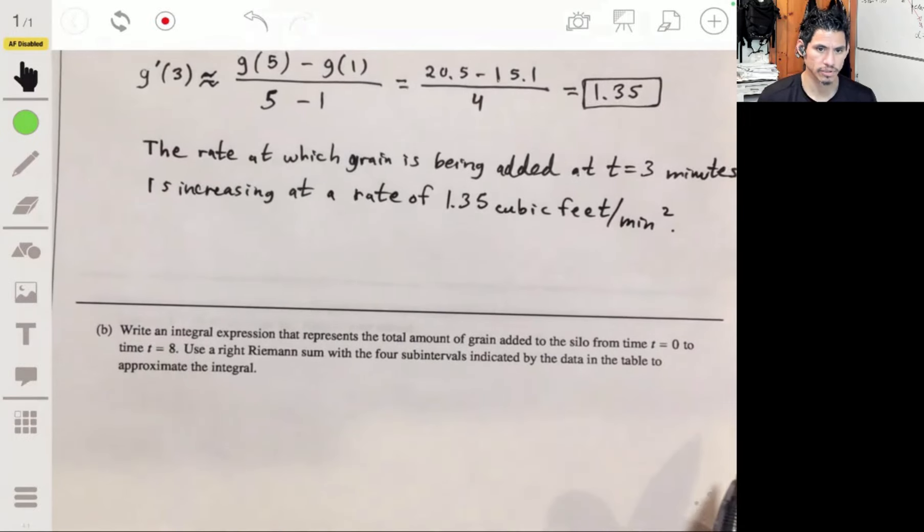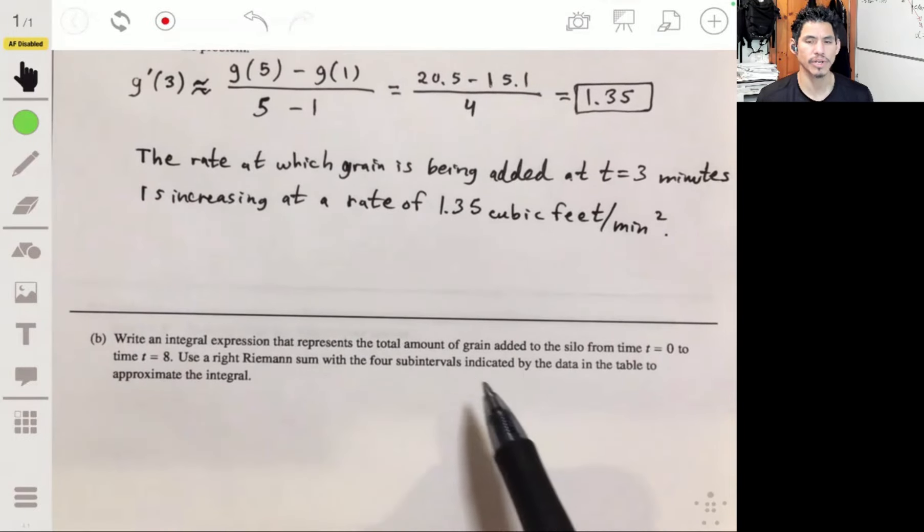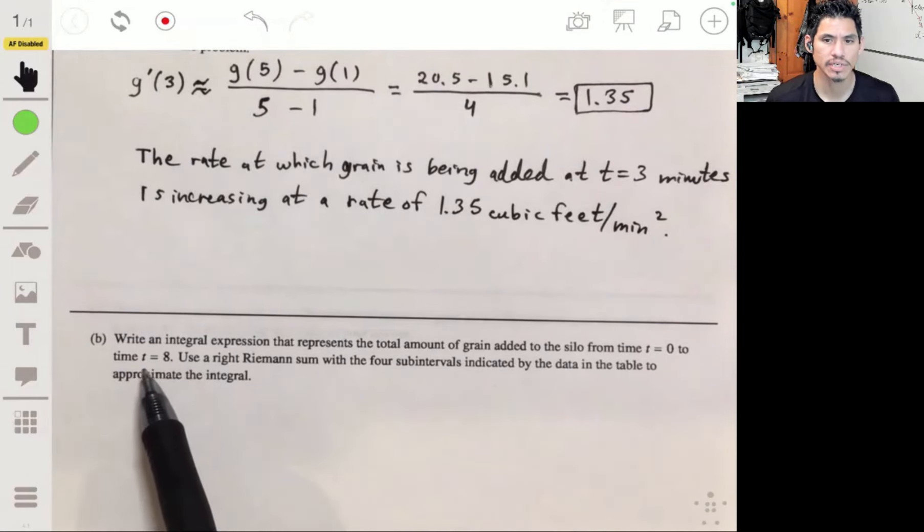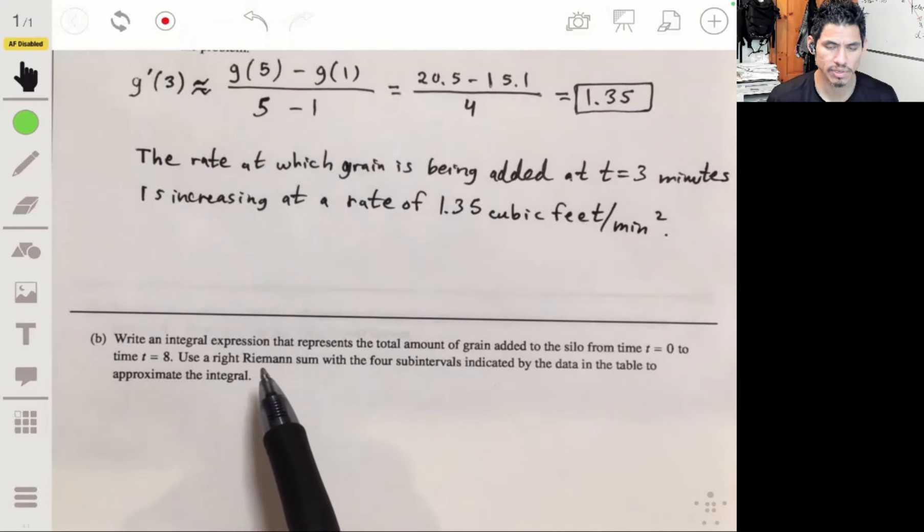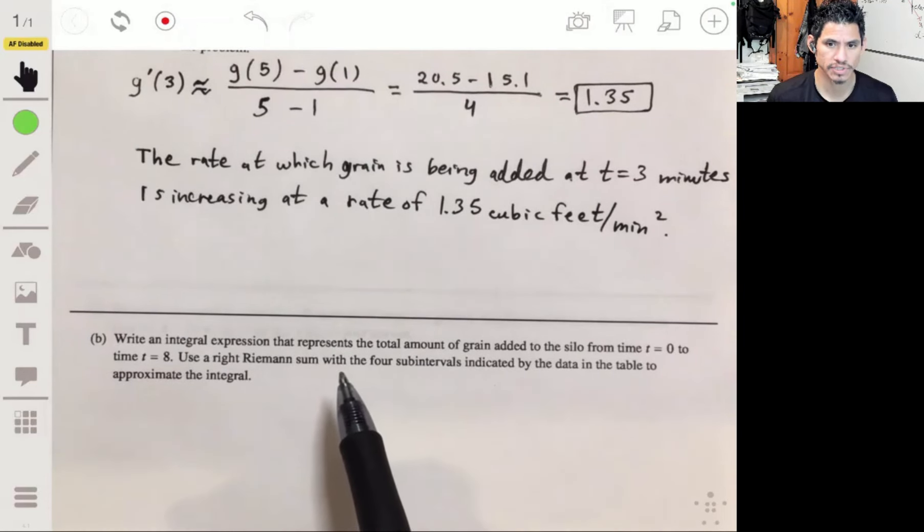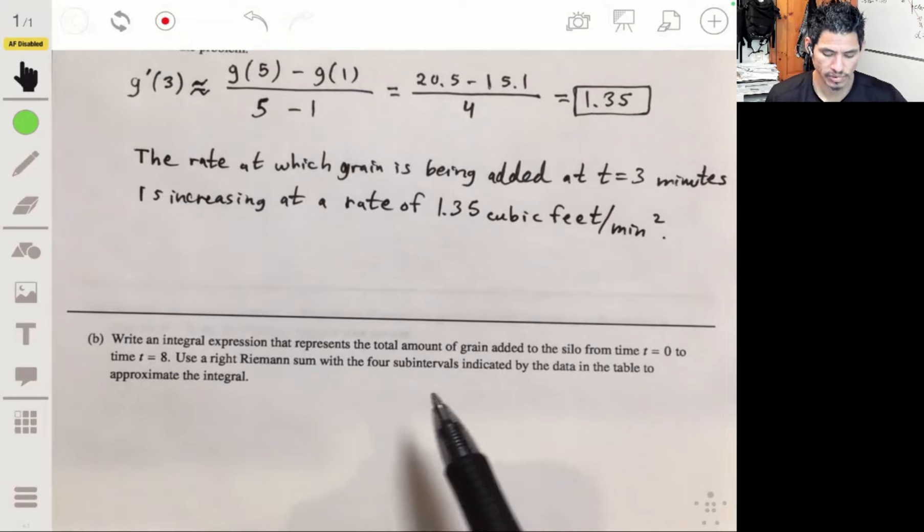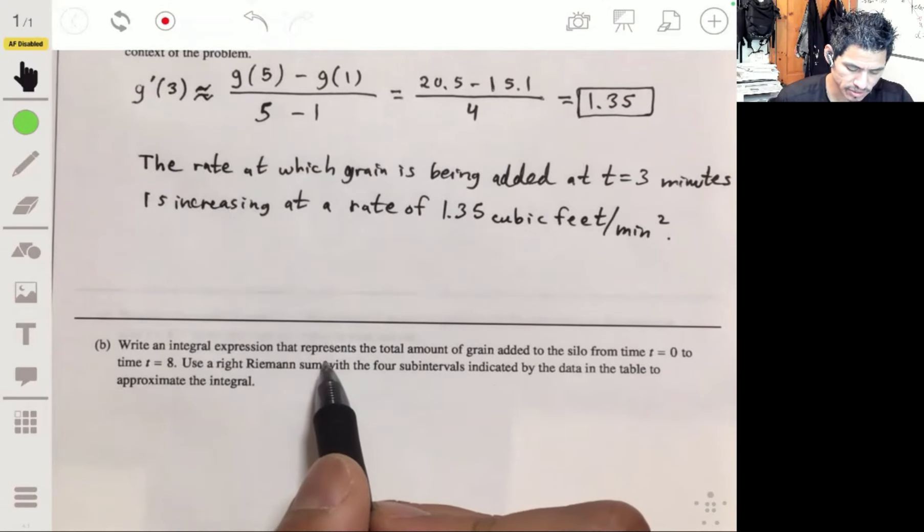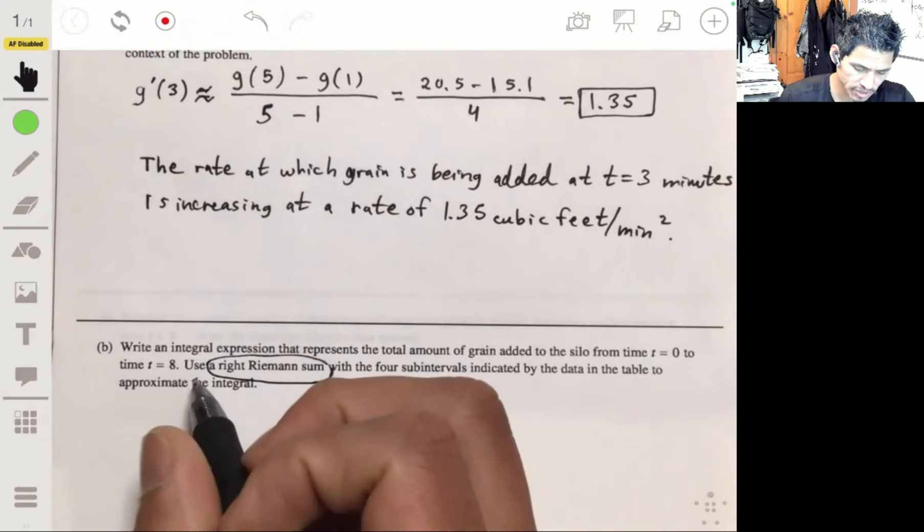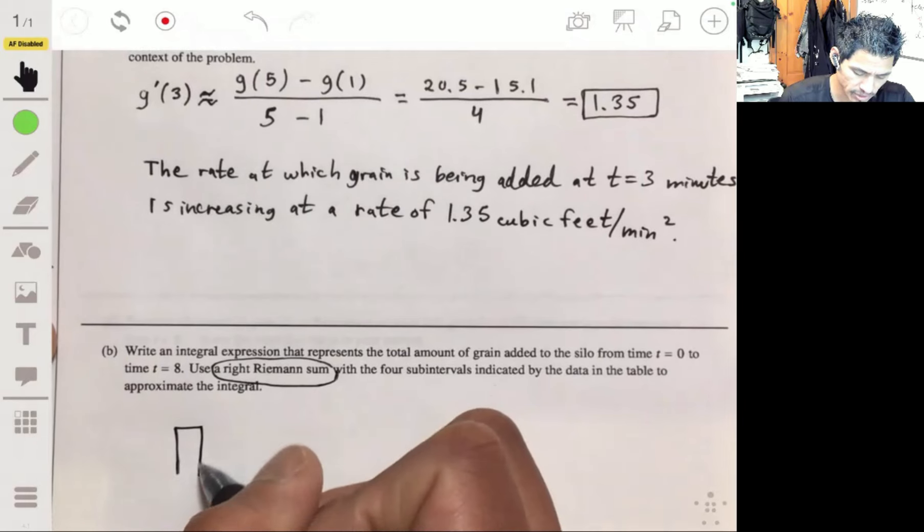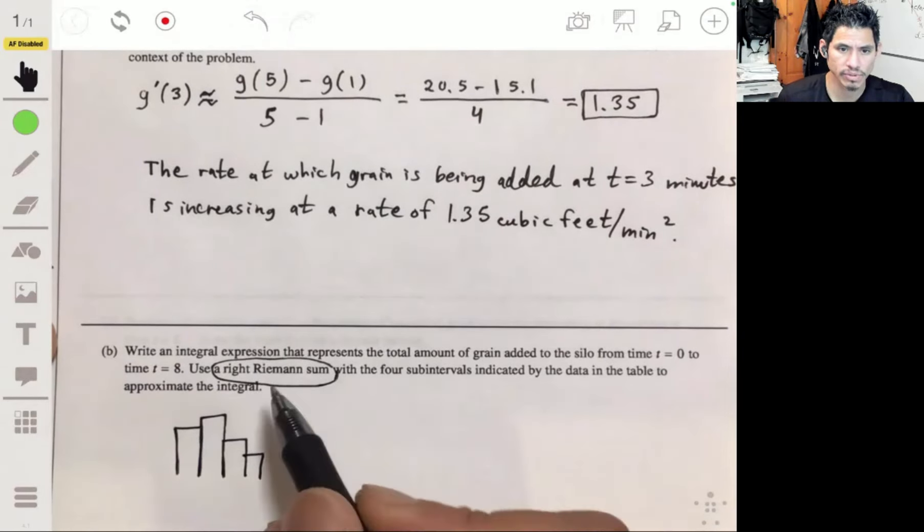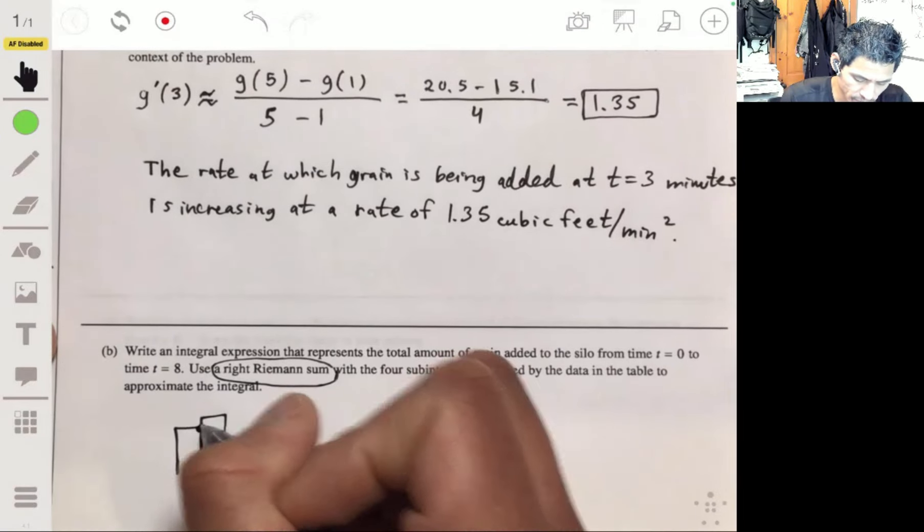All right, and there we go. Write part B, write an integral expression that represents a total amount of grain added to the silo from t equals zero to time t equals eight. Use a right Riemann sum with the four subintervals indicated by the table to approximate the integral. Okay, so remember Riemann sum is just, you're essentially approximating something with rectangles. Now, if it's a right Riemann sum, you're going to use the right endpoint of the function.